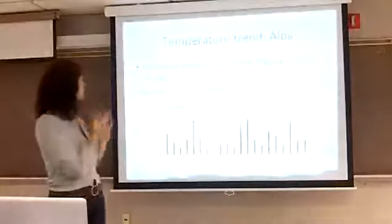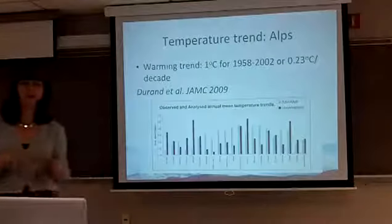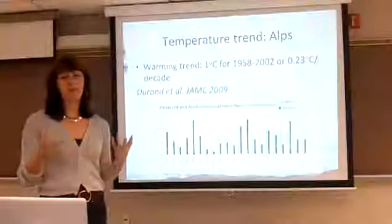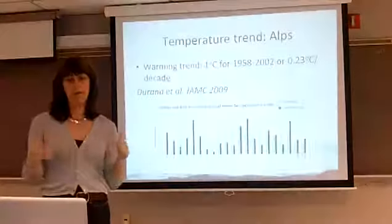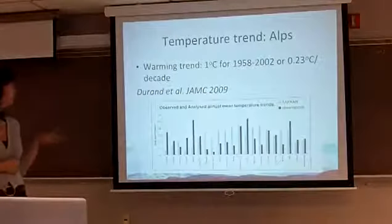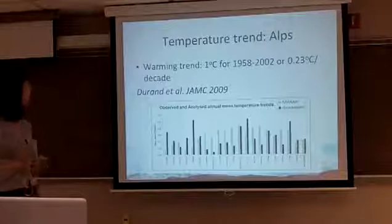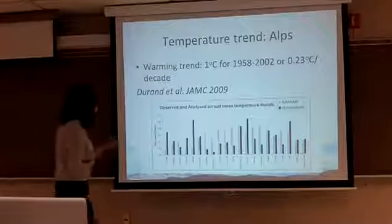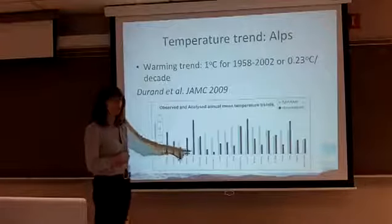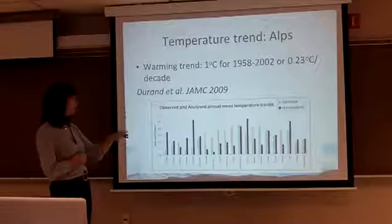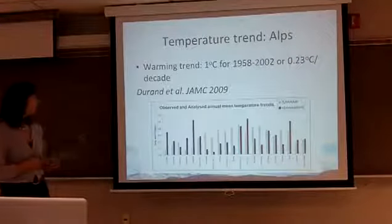For the temperature trends, there have been quite a lot of studies. We're going to start with the Alps, probably one of the most observed mountain ranges in the world. Recently, they've even created a reanalysis dataset for that particular region. Using this reanalysis, they found that from 1958 to 2002, they observed a one degree increase in temperature over the Alps, which is 0.23 degrees C per decade. This plot shows, in black, the observed temperature trends for various locations in the Alps, and in gray what the reanalysis shows — all places have a positive trend, and in some places it's quite large.